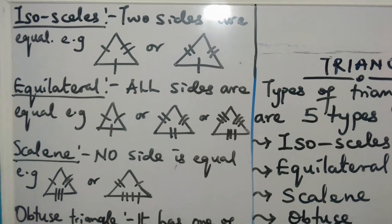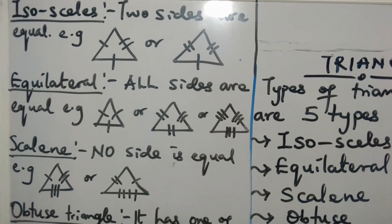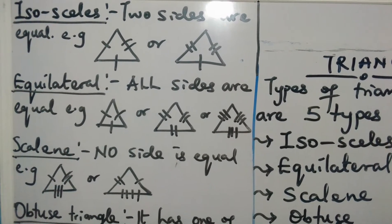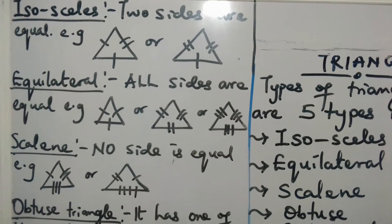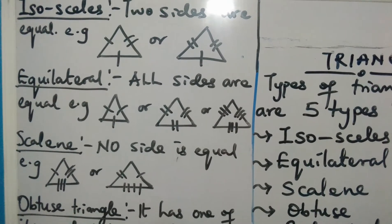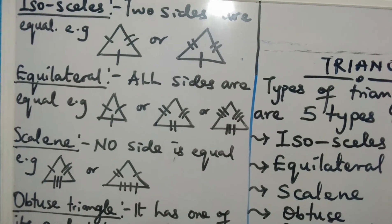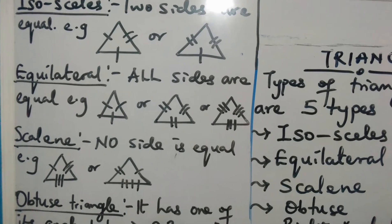Scalene triangles are triangles that have none of their sides equal. No side is equal. So if you have one centimeter on one side, the other will be two centimeters, the third will be three centimeters.